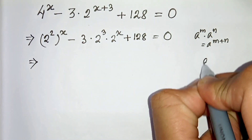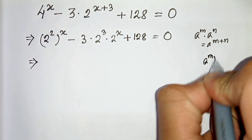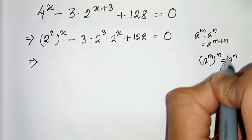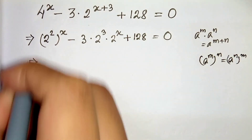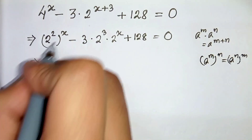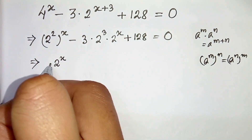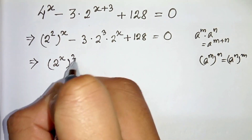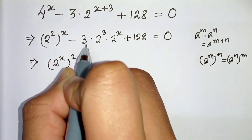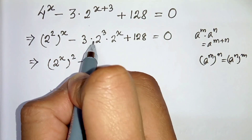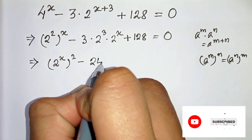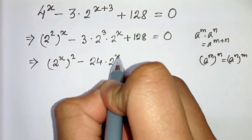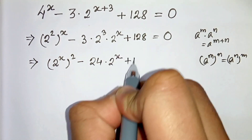And again we know that a raised to the power m, power n can be written as a raised to the power n, power m. So from this we can write 2 to the power x, power 2. And 2 cubed is 8, so 3 times 8 is 24 — giving us 24 times 2 to the power x, plus 128.